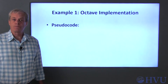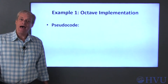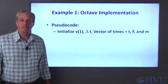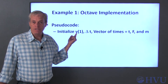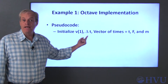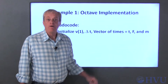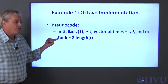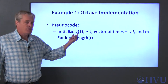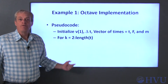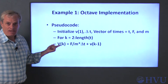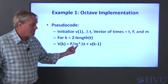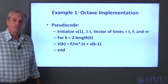Now let's generate Octave code to perform this process. I'll write pseudocode first. We need to initialize variables, storing velocities and times in arrays. The first element in the velocity array will be the initial condition, v equals zero. Choosing a time step size and an ending time gives us the time vector. We also need values for f and m. We calculate velocity values for the remaining elements using a for loop, starting at k equals 2. For each value of k, the velocity at element k equals the velocity at the previous time step plus the slope f over m times the time step dt.